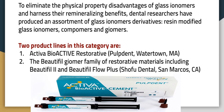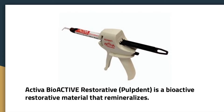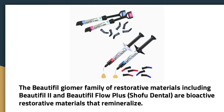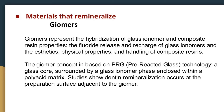Giomers represent the hybridization of glass ionomer and composite resin properties, combining the fluoride release and recharge of glass ionomers with the aesthetics, physical properties, and handling of composite resins. The giomer concept is based on PRG (pre-reacted glass) technology: a glass core surrounded by a glass ionomer phase, enclosed within a polyacid matrix. Studies show dentin remineralization occurs at the preparation surface adjacent to the giomer.